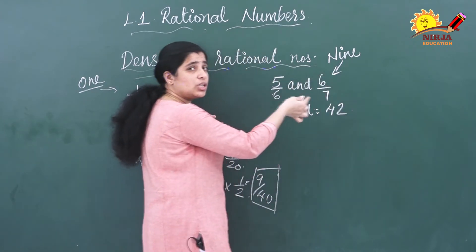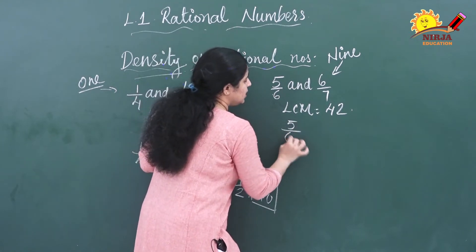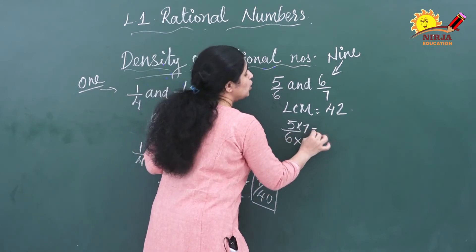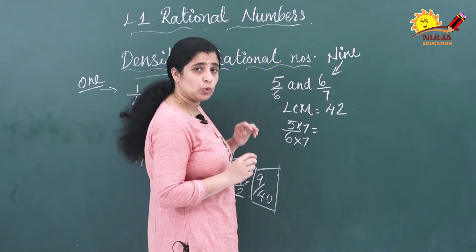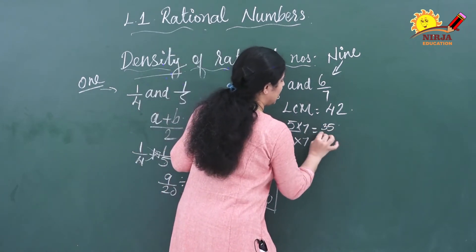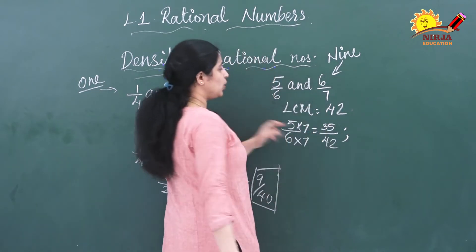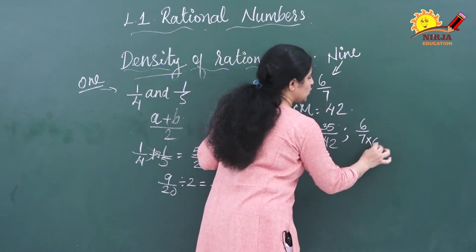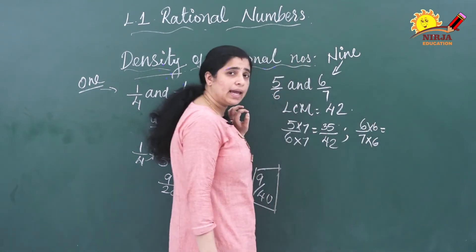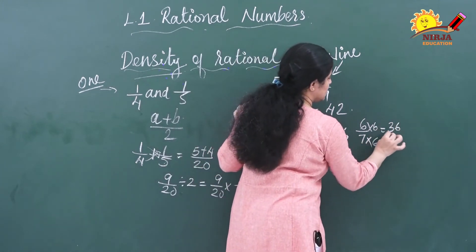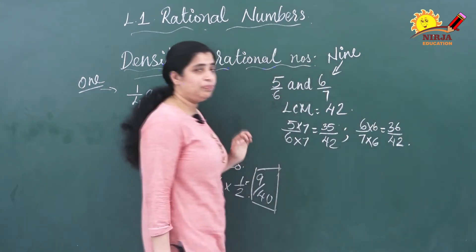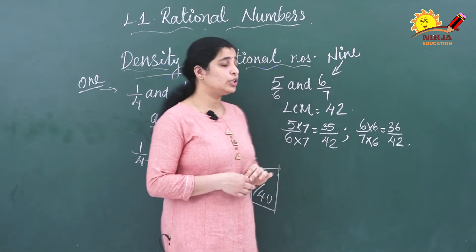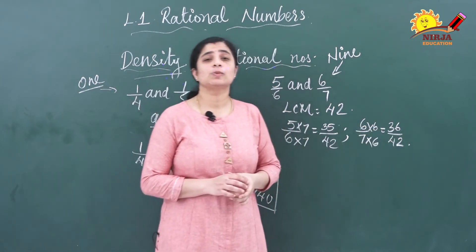Now you have to change these two rational numbers. For 5/6, multiplying the denominator by 7 gives 42, so you multiply the numerator by 7 as well: 5 × 7 = 35, giving 35/42. For 6/7, multiplying the denominator by 6 gives 42, so: 6 × 6 = 36, giving 36/42. So the equivalent fractions we get are 35/42 and 36/42. However, it is still very difficult to find 9 rational numbers between these.